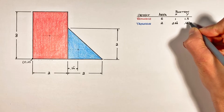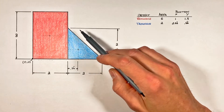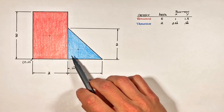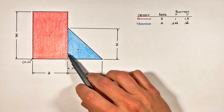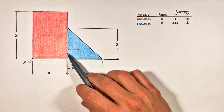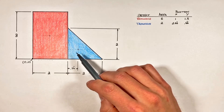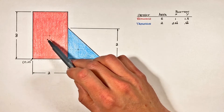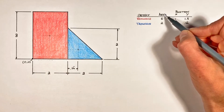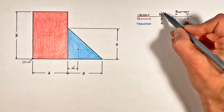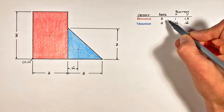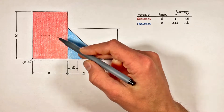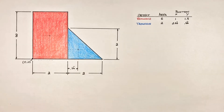I keep treating center of area and center of mass as though they're the same thing. If we were strictly solving for center of mass and these objects were made of two completely different materials, rather than having areas listed in the table we would simply put in the individual masses of our two different objects.